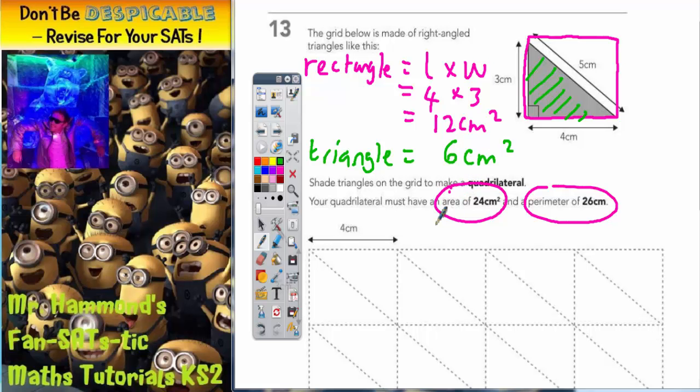Now, considering that we need to have a quadrilateral with an area of 24, this is going to mean we will need to shade in 4 triangles. Because 6cm squared times 4 is going to give us our 24cm squared. So we need to shade 4 triangles.